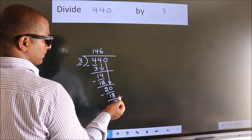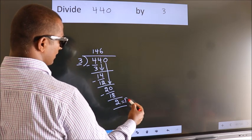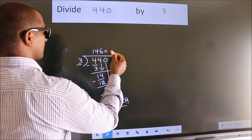No more numbers to bring it down. So we stop here. This is our remainder. This is our quotient.